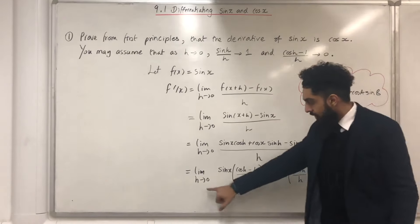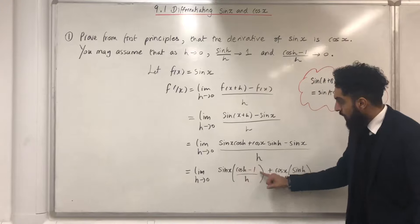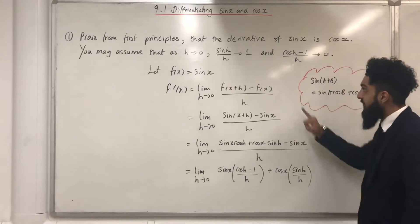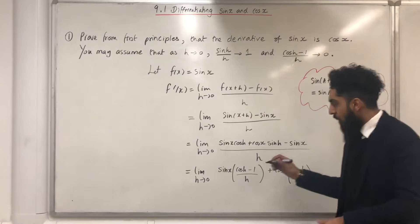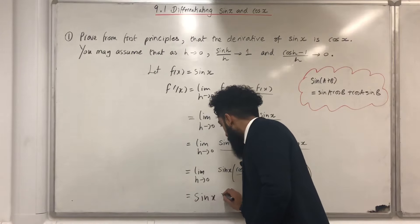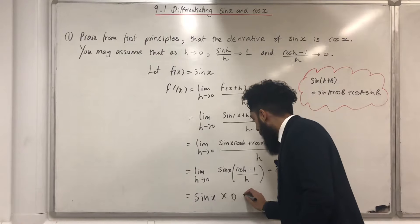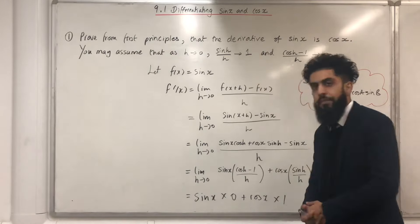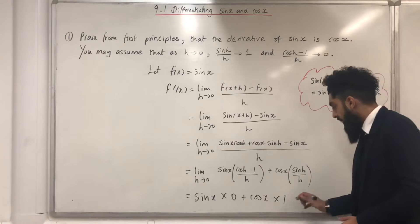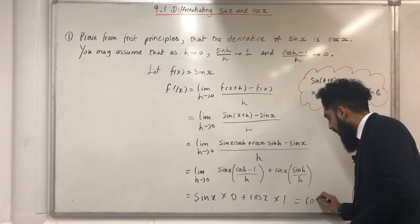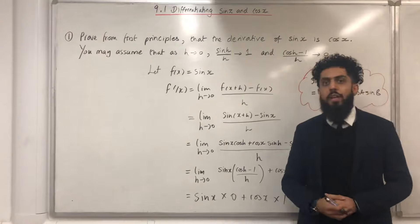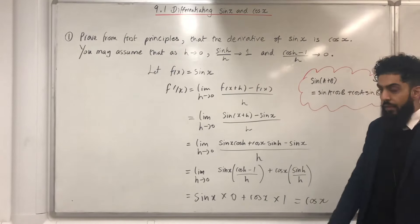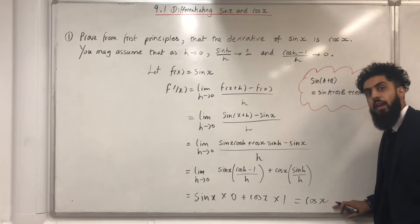As h tends to 0, Cos h minus 1 over h tends to 0, and Sine h over h tends to 1. So I end up with Sine X multiplied by 0 plus Cos X multiplied by 1. Simplifying this gives Cos X. Therefore, if f of x equals Sine X, then f dash of x from first principles is Cos X.